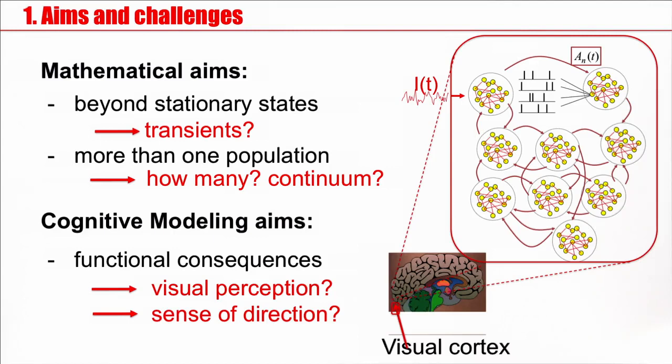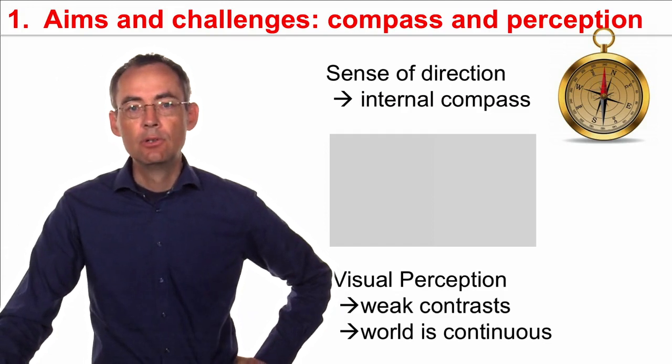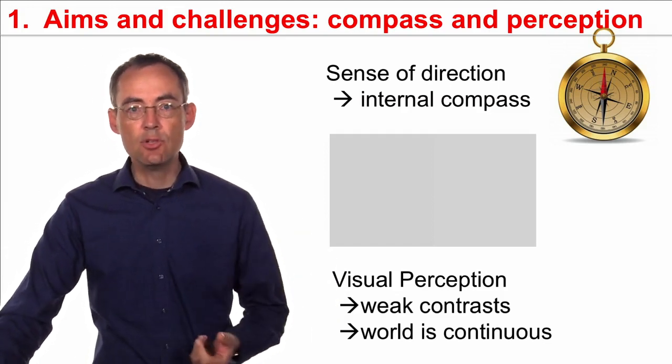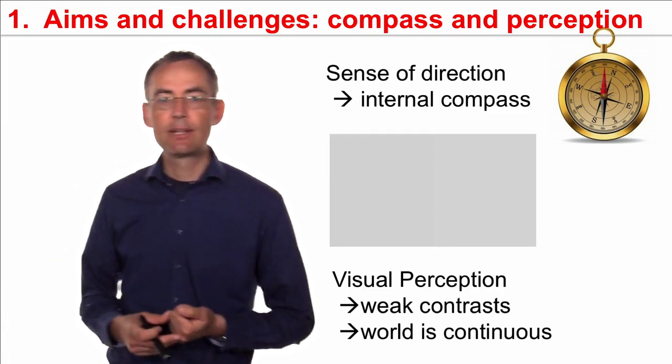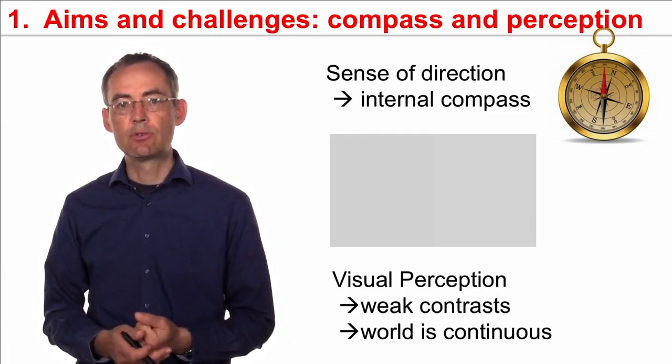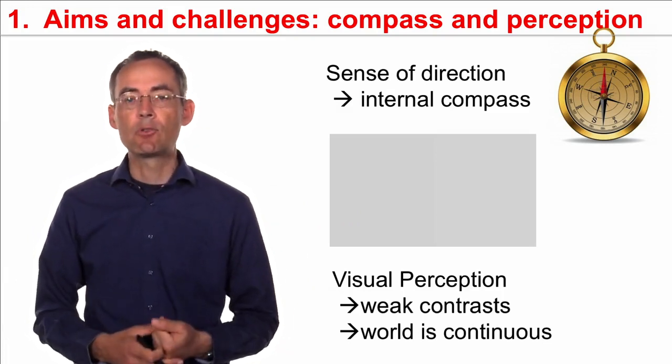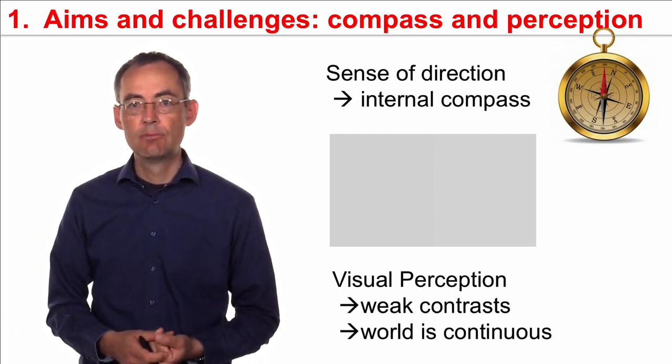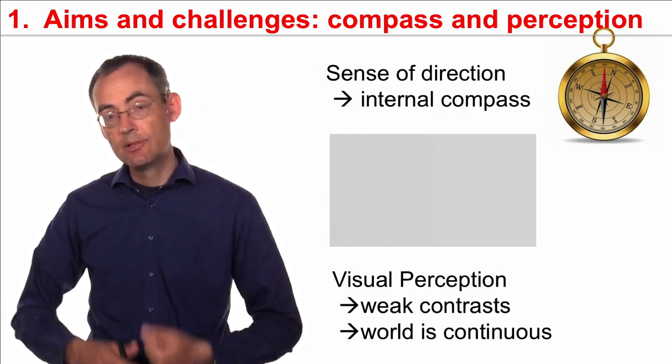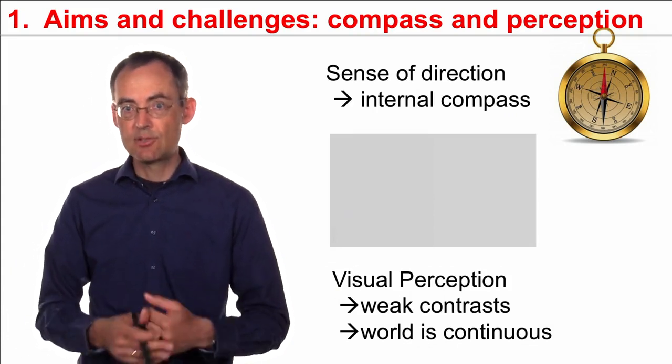Now, in terms of cognitive modeling, our aims are to describe a few effects of visual perception and the sense of direction that we had discussed before. We'll have to do quite a bit of math to arrive at the so-called field equations. These field equations are intrinsically continuous, and this continuity reflects the fact that the world outside is continuous. So we have to do a bit of work, but it's worth the effort because, in the end, we will be able to apply our field models to our sense of direction, the internal compass, and to our sense of perception. So it's worth doing it. Stay tuned. We'll do a bit of work, but please stay on.